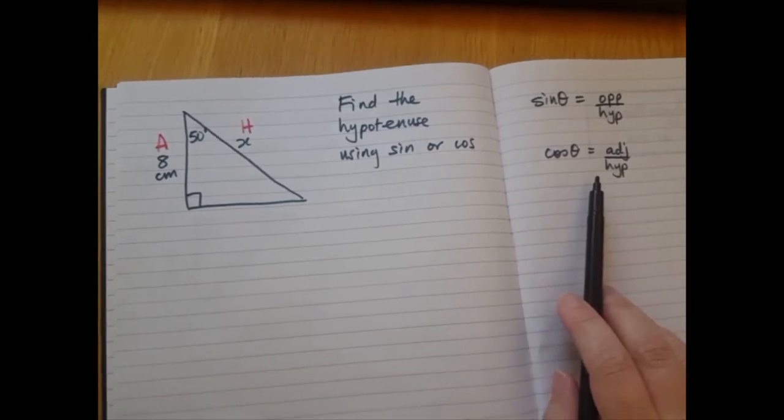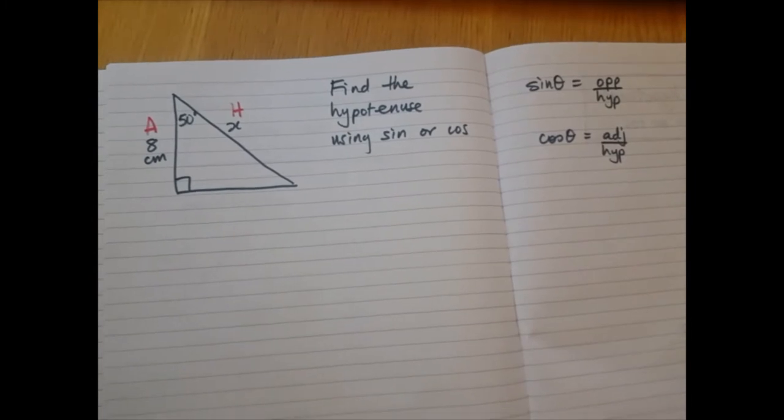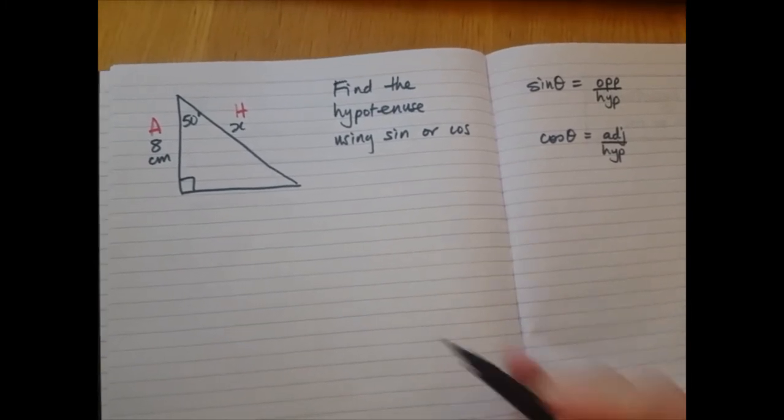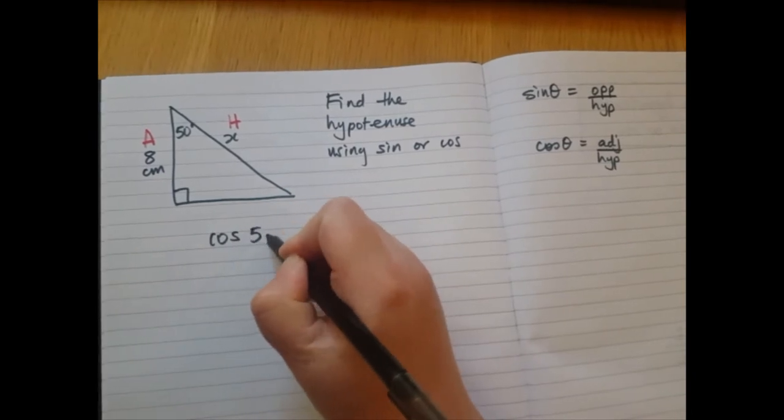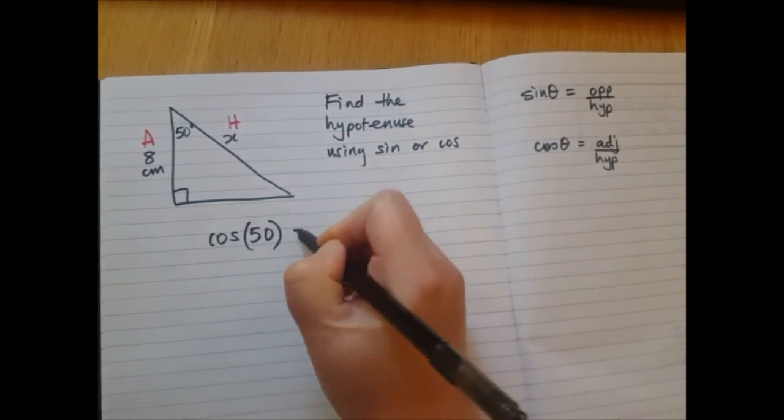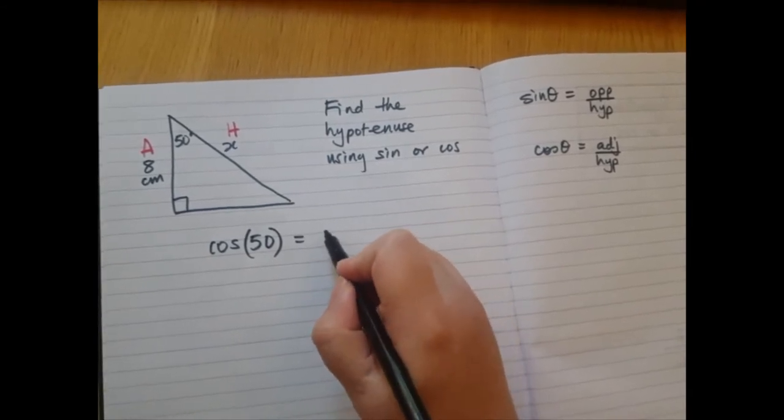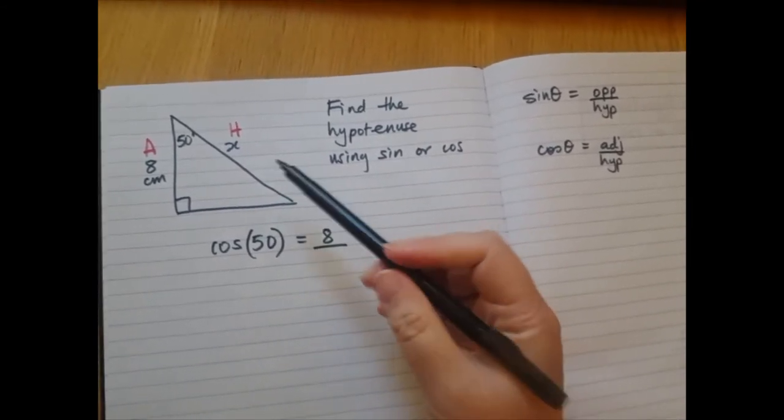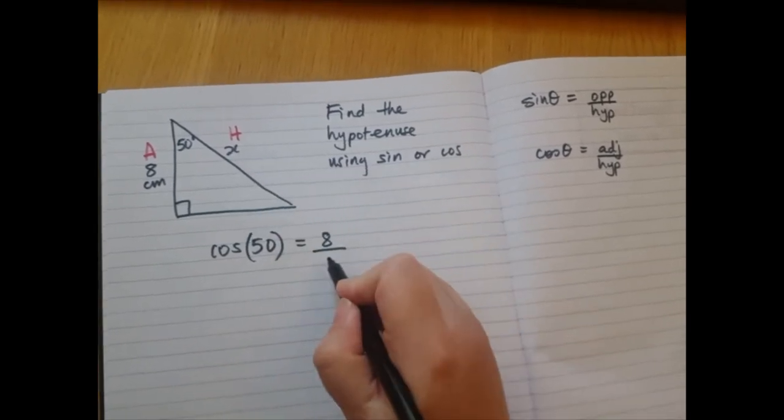So now let's write the formula out and we're going to replace the numbers that we know. So first, cos angle. We know the angle is 50 degrees. We know the adjacent is the number 8 and we know the hypotenuse. Well, we don't, but we're going to call it letter x. That's what we want to find.